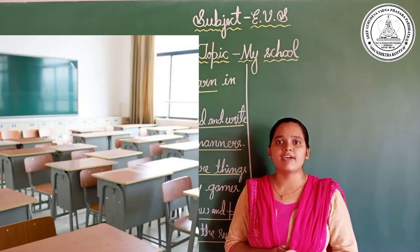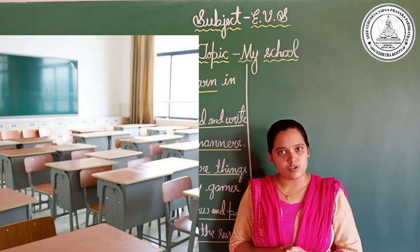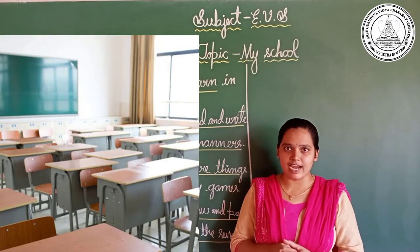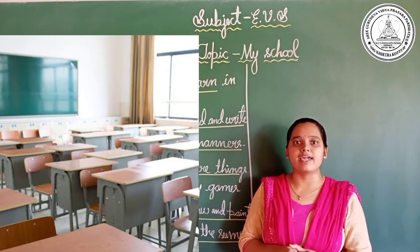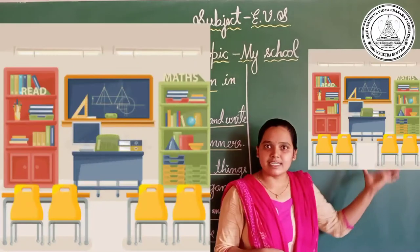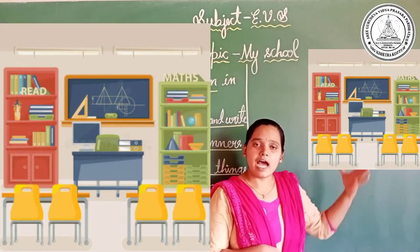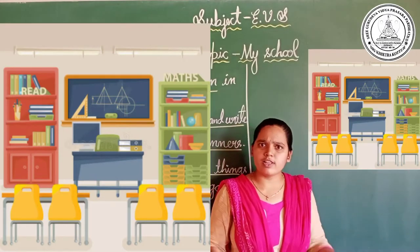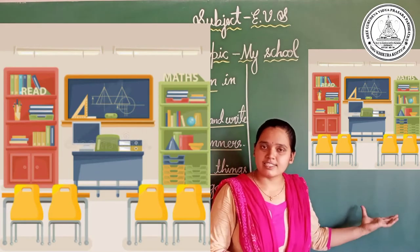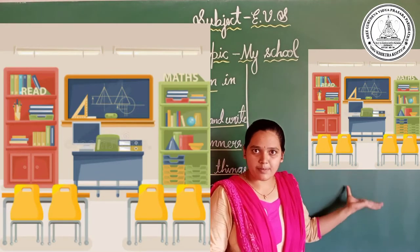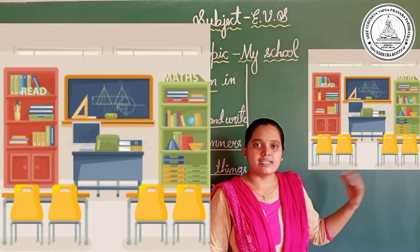Do you know where Alok's classroom is? In Alok's school there are three floors, and Alok's classroom is on the first floor. Observe the picture. What are all the things present in the picture? There are desks, chairs, a blackboard, a display board, maps, and charts. Why should we have a display board in the classroom? Because students' drawings are put up on the display board.